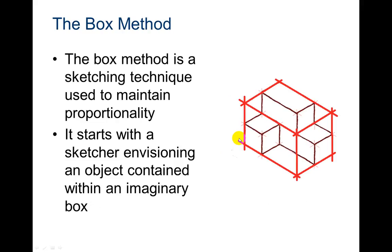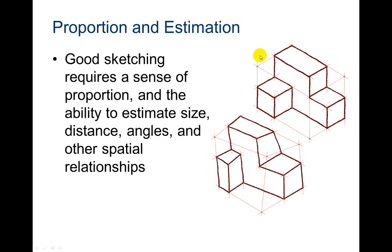To draw these isometric, some people will use the box method. The box method is a sketching technique used to maintain proportionality. It starts with the sketcher envisioning an object contained within an imaginary box. So here's the object. And first they draw these construction lines just to envision what it would be sitting inside. It also helps with your proportion and estimation by drawing that imaginary box. Good sketching requires a sense of proportion and the ability to estimate the size, distance, angles, and other spatial relationships.